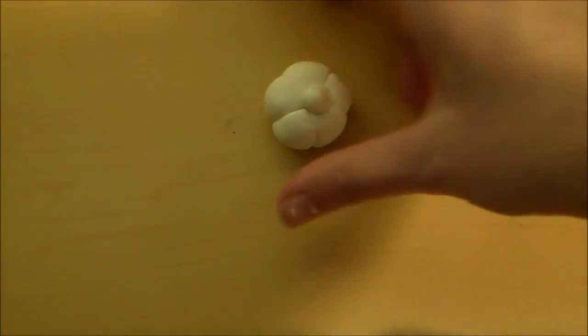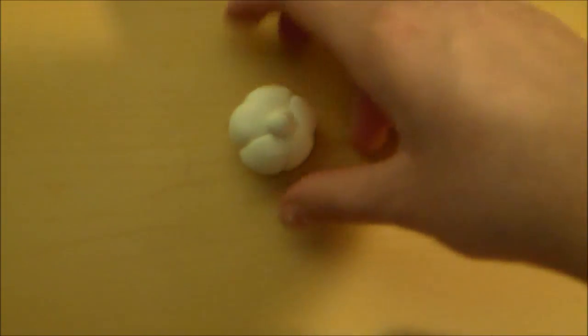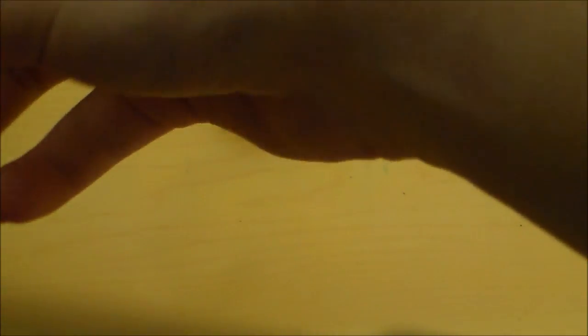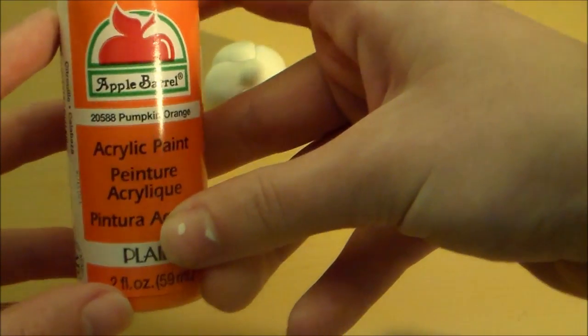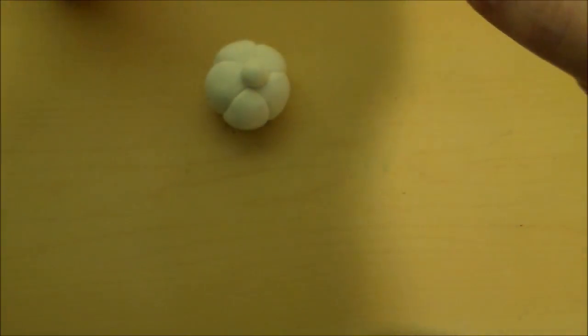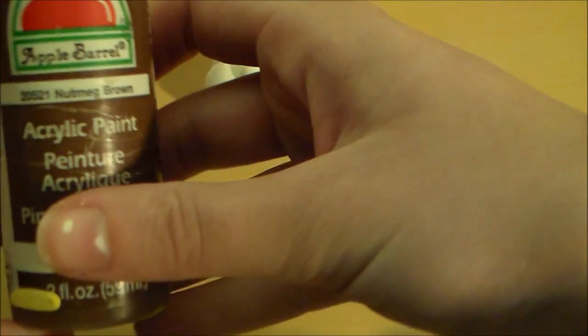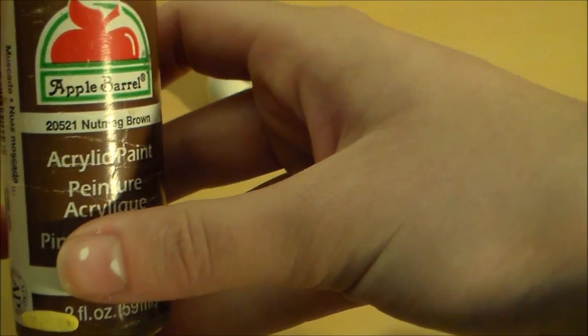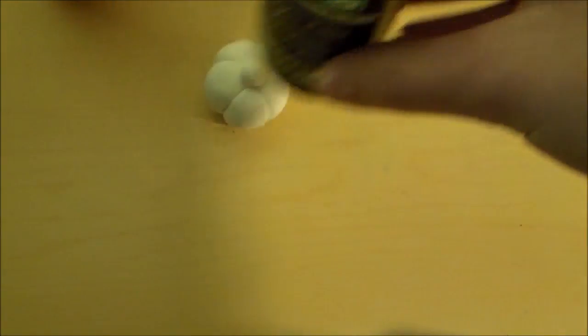Alrighty. So it's been 72 hours and our clay sculptures have dried. So we're going to begin to paint them. For the pumpkin, I have Apple Barns 20588 pumpkin orange. And then for the stem, I've got 20521 nutmeg brown.